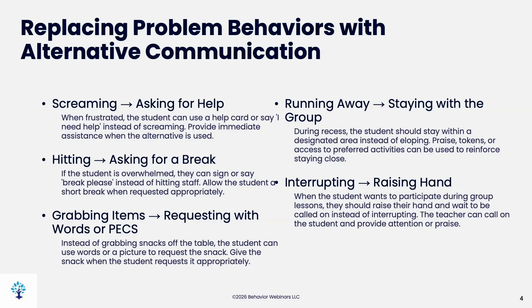Interrupting is most likely serving the function of attention, so the alternative behavior would be raising a hand and still getting that attention — you would call on them and provide praise. With all replacement behaviors, we provide the natural reinforcement, whatever the function is, and also provide extra reinforcement such as praise or something else they want. The reason for that is you have to make this new behavior more desirable than the problem behavior. They have to gain more for this new behavior — they should get what they'd gain from the problem behavior, plus more.